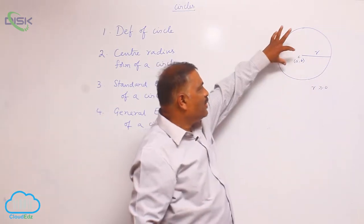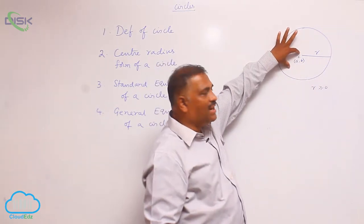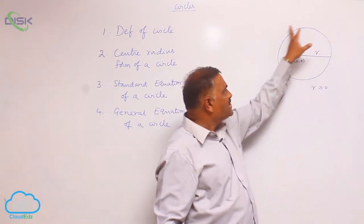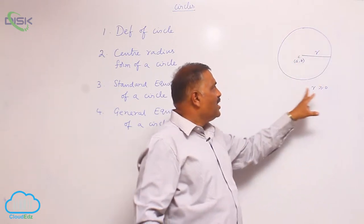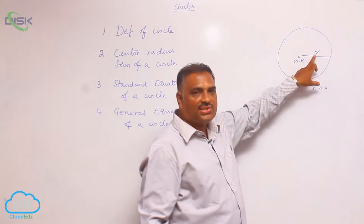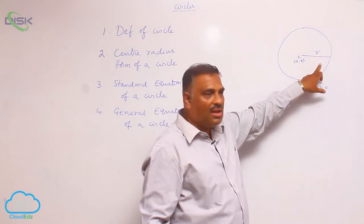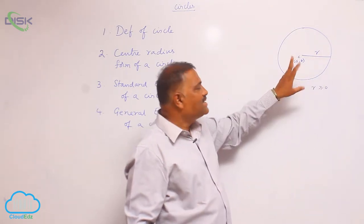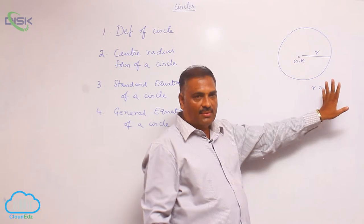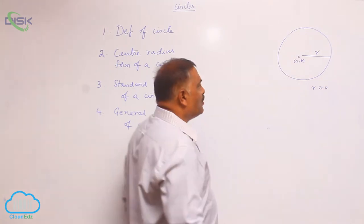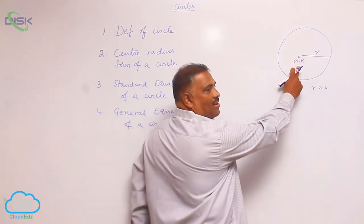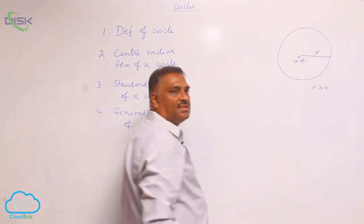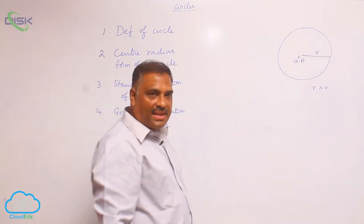So, we define once again: the definition of a circle. The set of points in a plane which are at a constant distance r from a fixed point (a, b) is called a circle. The fixed point is called the center, and the constant distance is called the radius.